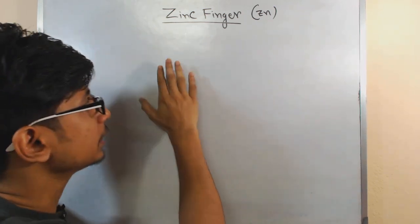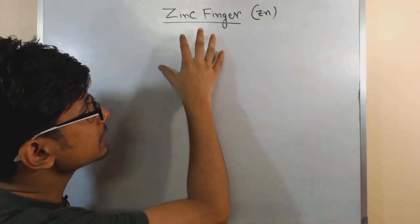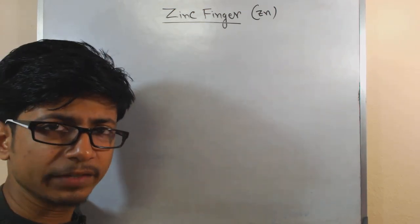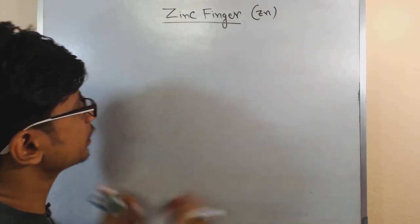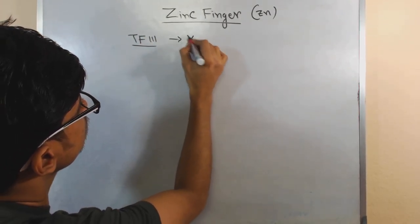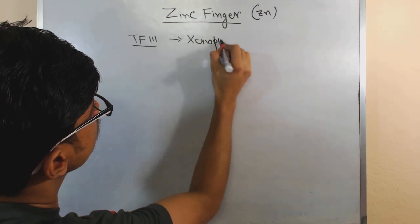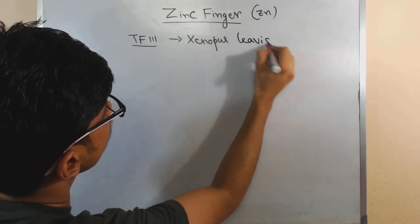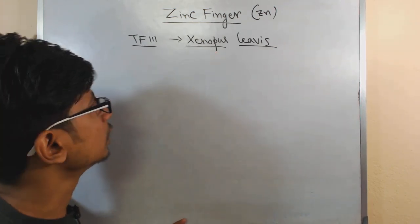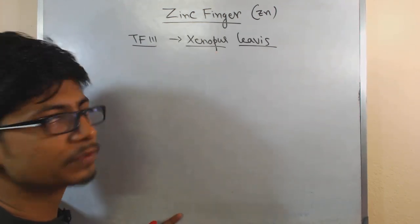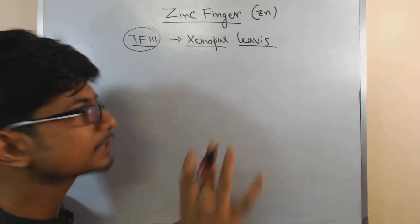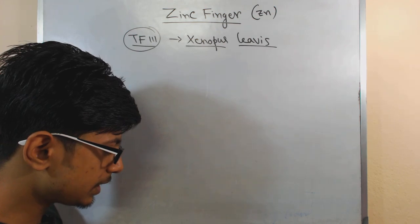Now, why did this name come about? It was discovered in Xenopus laevis — a kind of frog — specifically in transcription factor IIIA. In this transcription factor a specific type of motif was found.